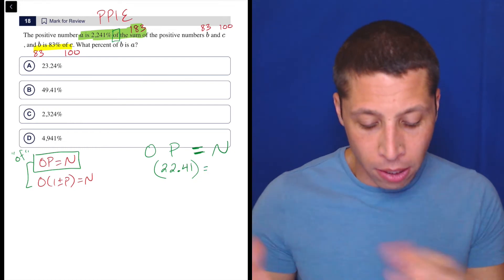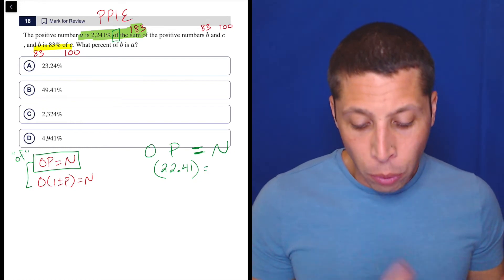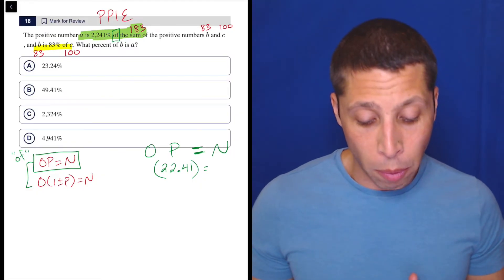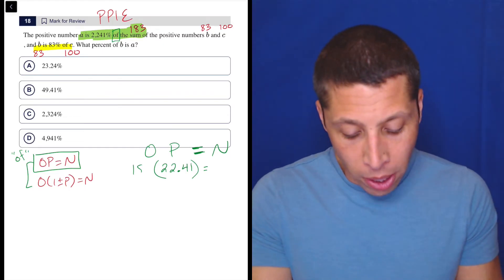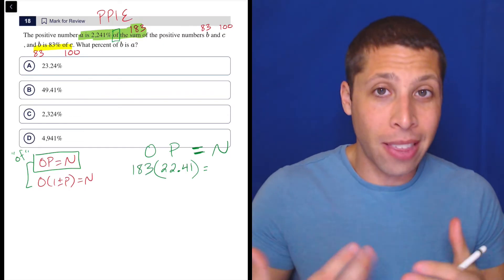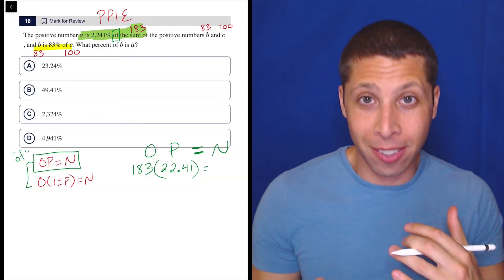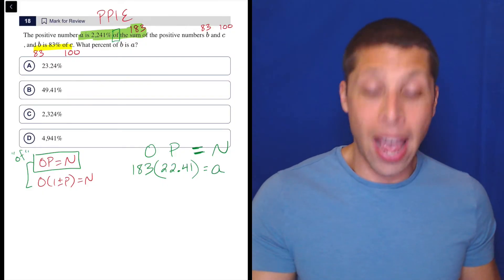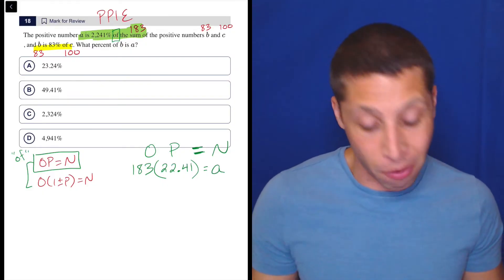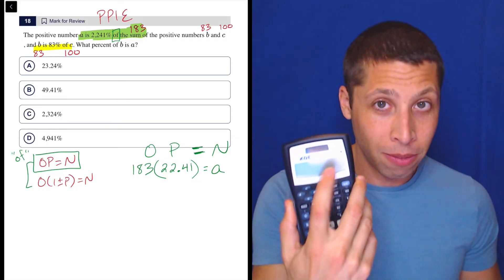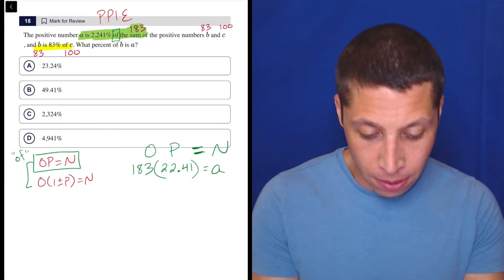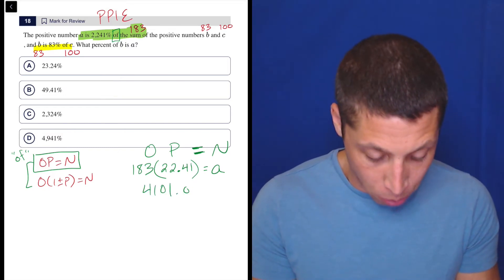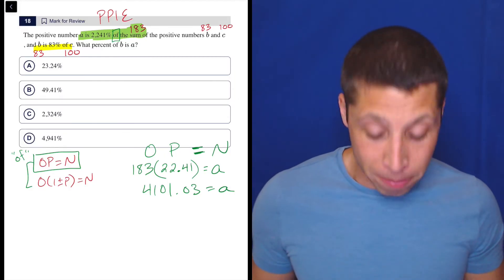Now we need to think, okay, what's the original and what is the new? Well, the word 'of' is really helping me out here because A is, which means equals, 2,241% of 183. So 183 is my original. That's the thing that A is based on. A only exists from this original value, 183. So for now, I'm just going to find A as the new because it's okay if I have a variable now because I'm going to solve for it. So what is usual, just use the regular calculator. What is 183 times 22.41? That is 4101.03. A little messy, but that's okay.